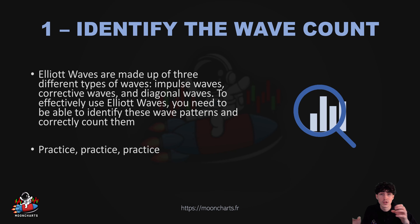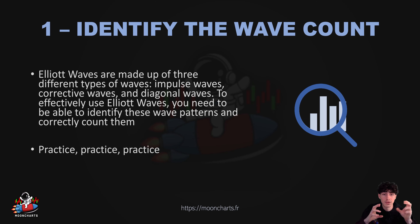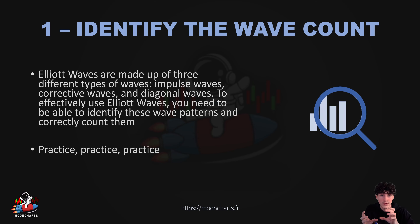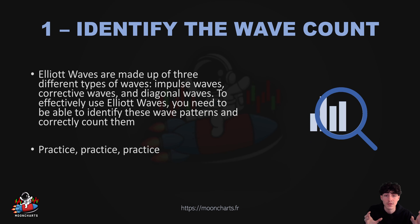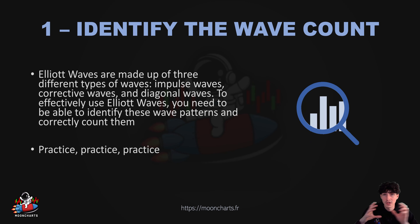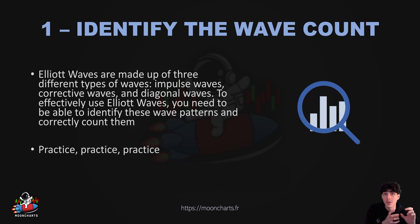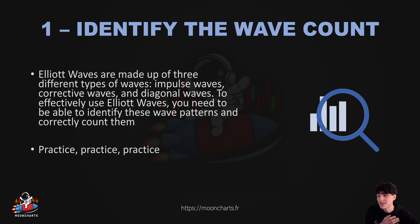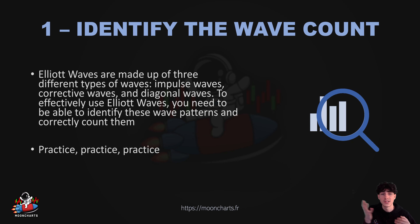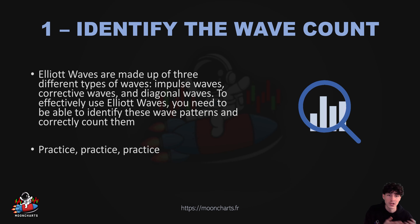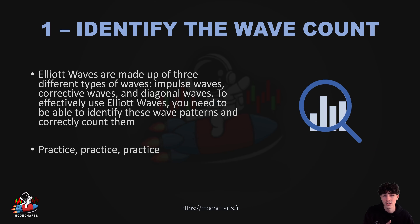You have to know the small wave of each pattern. For example, in an ABC zigzag, you need to know what the small waves of the A wave, B wave, and C wave are. The A wave can be a leading or an impulsive. The B wave can be every kind of correction: ABC flat, ABC zigzag, double X-Y, double X-Y-X-Z, ABC triangle — it can be all of these clearly.